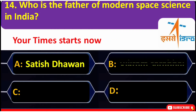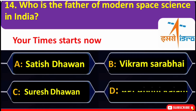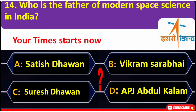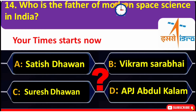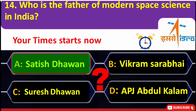Who is the father of modern space science in India? A. Satish Dhawan, B. Vikram Sarabhai, C. Suresh Dhawan, D. APJ Abdul Kalam. Correct answer is A — Satish Dhawan.